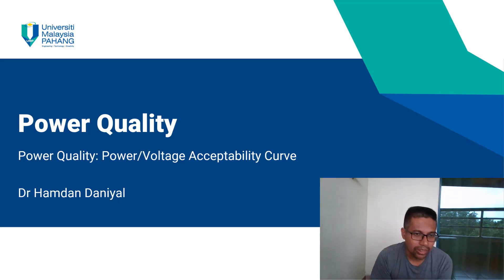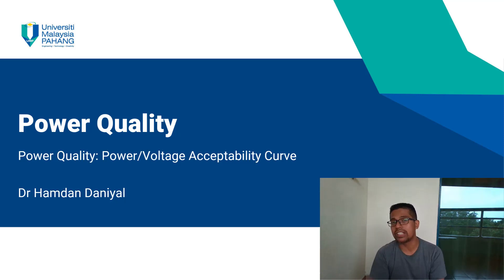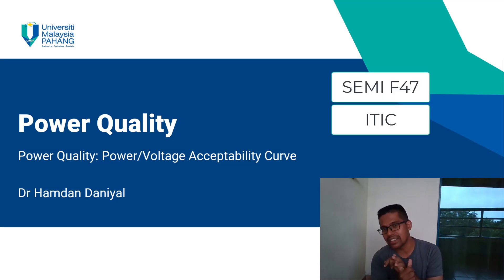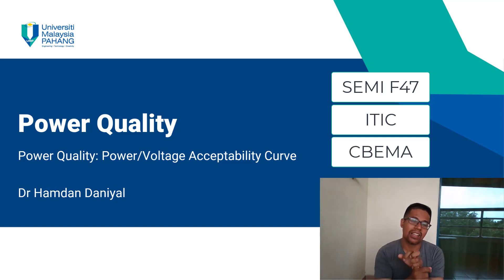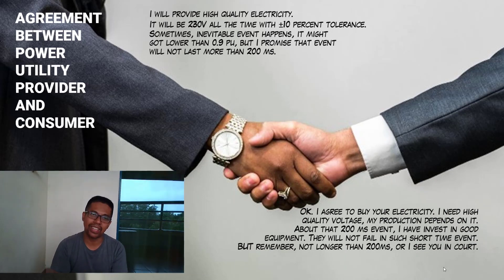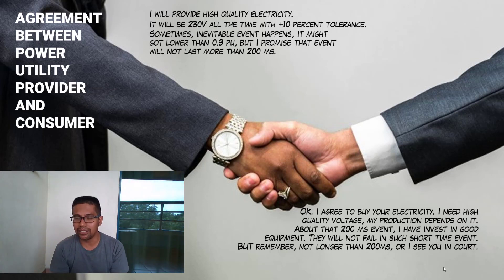Today we will talk about power quality, specifically the power acceptability curve or voltage acceptability curve. There are several acceptability curves available according to different standards: SEMI F47, ITIC, and the old CBEMA standard. All three have different curves, and this curve represents the agreement between the power provider and the power consumer.